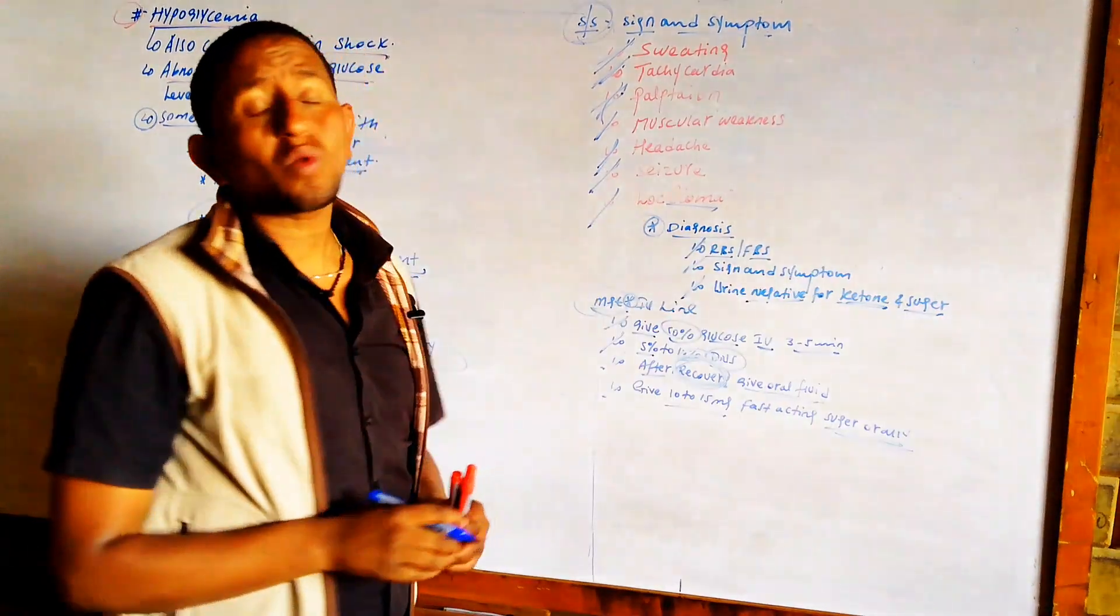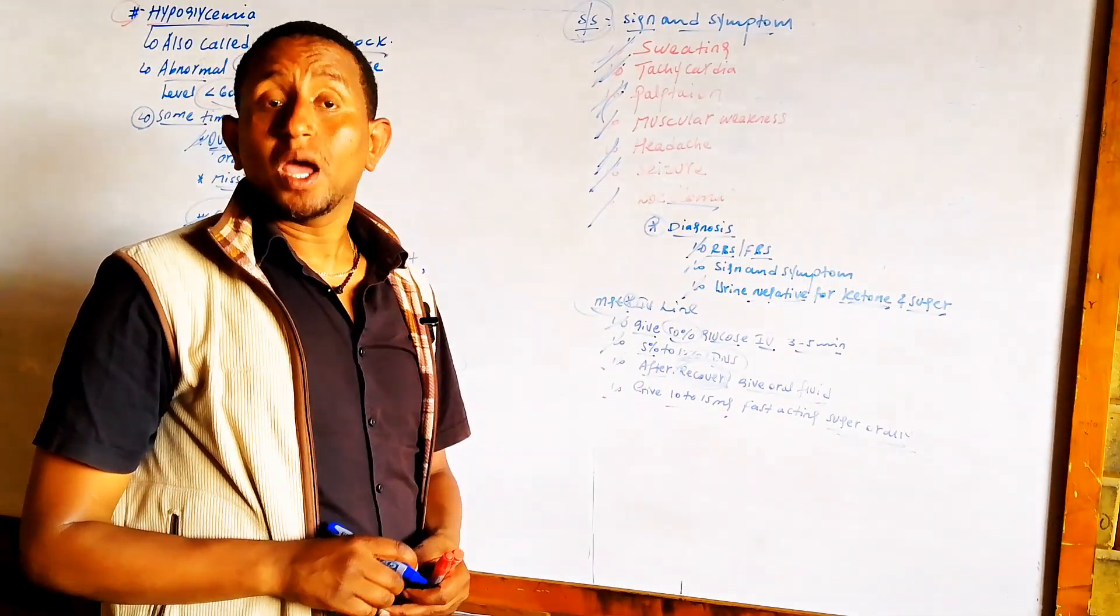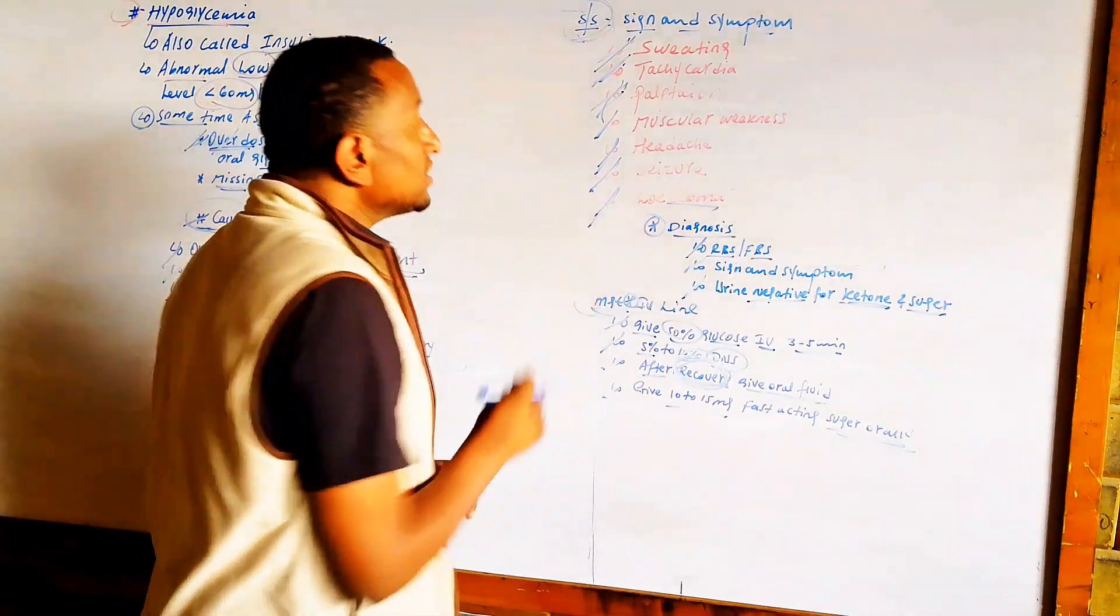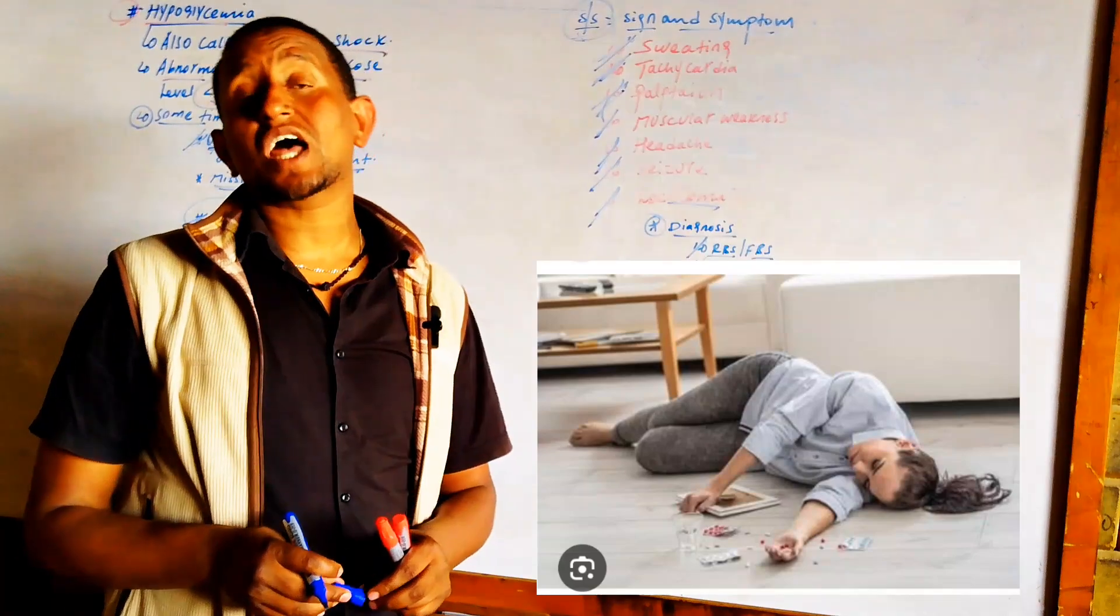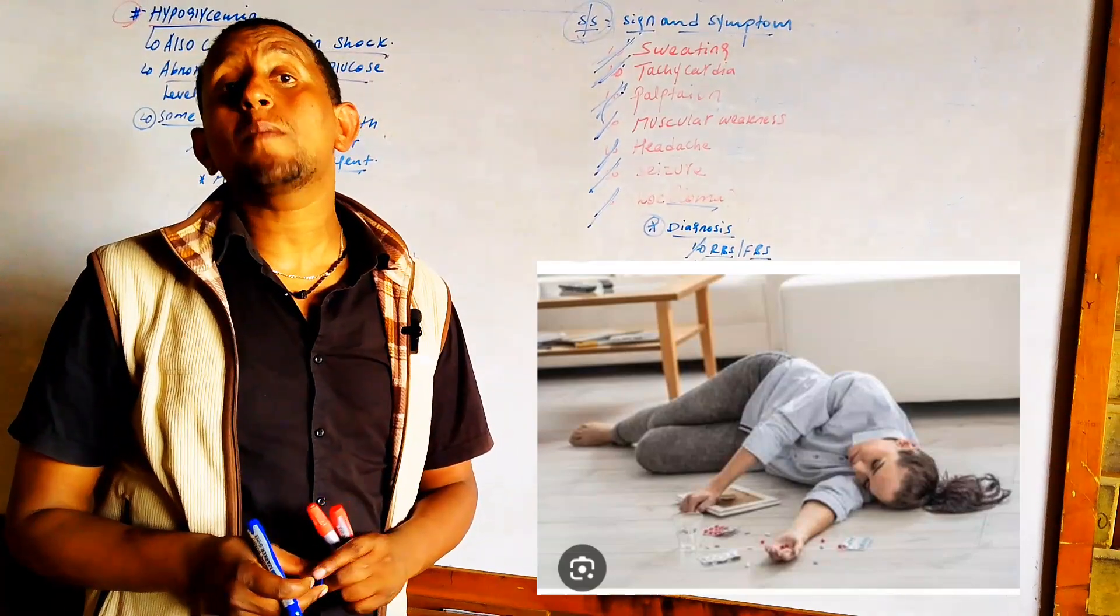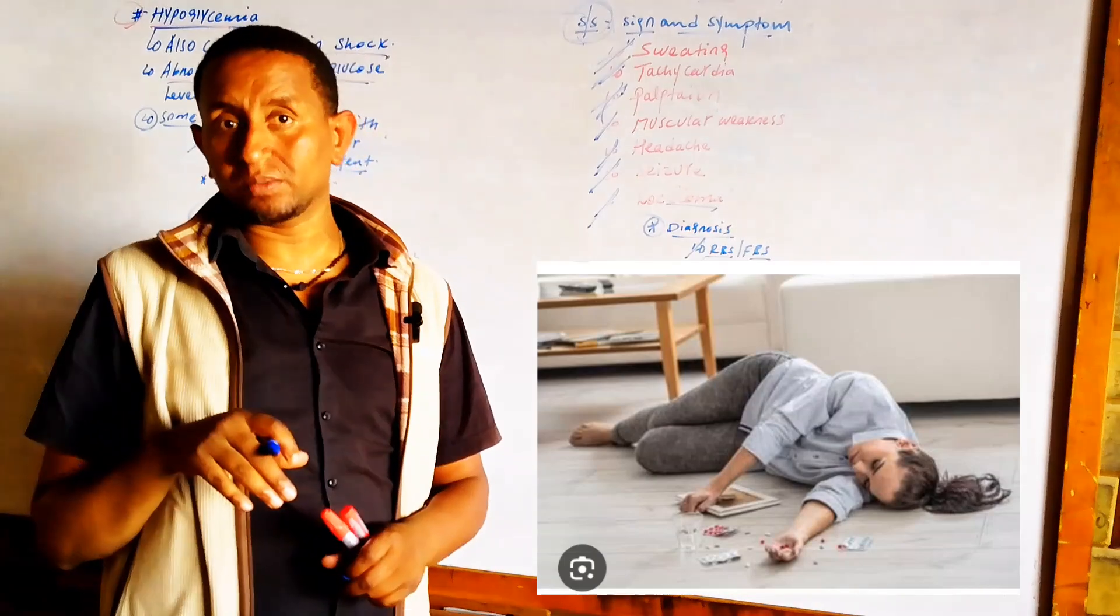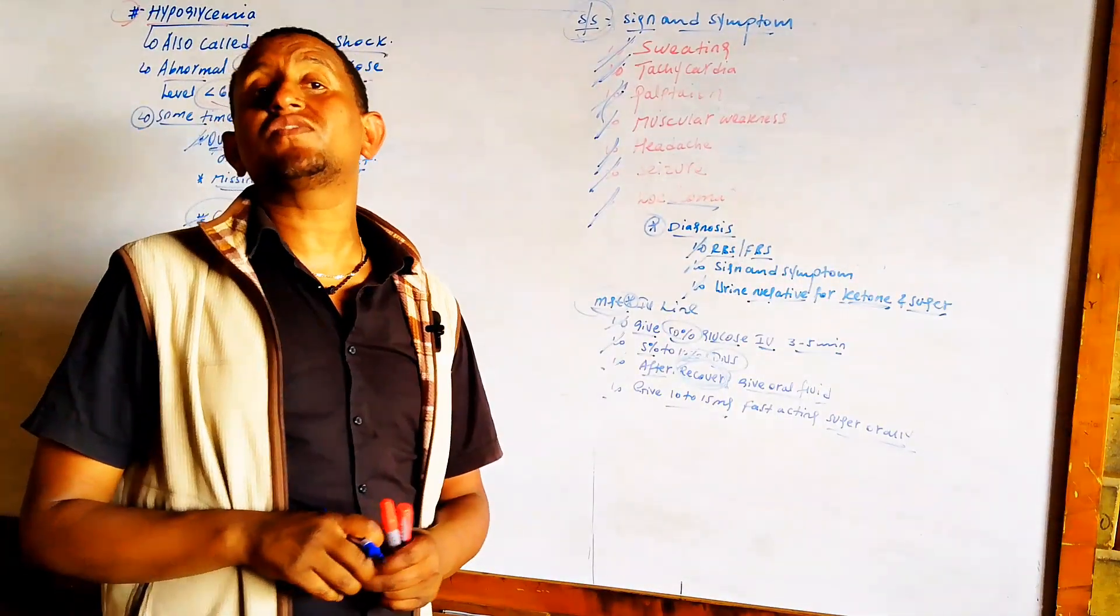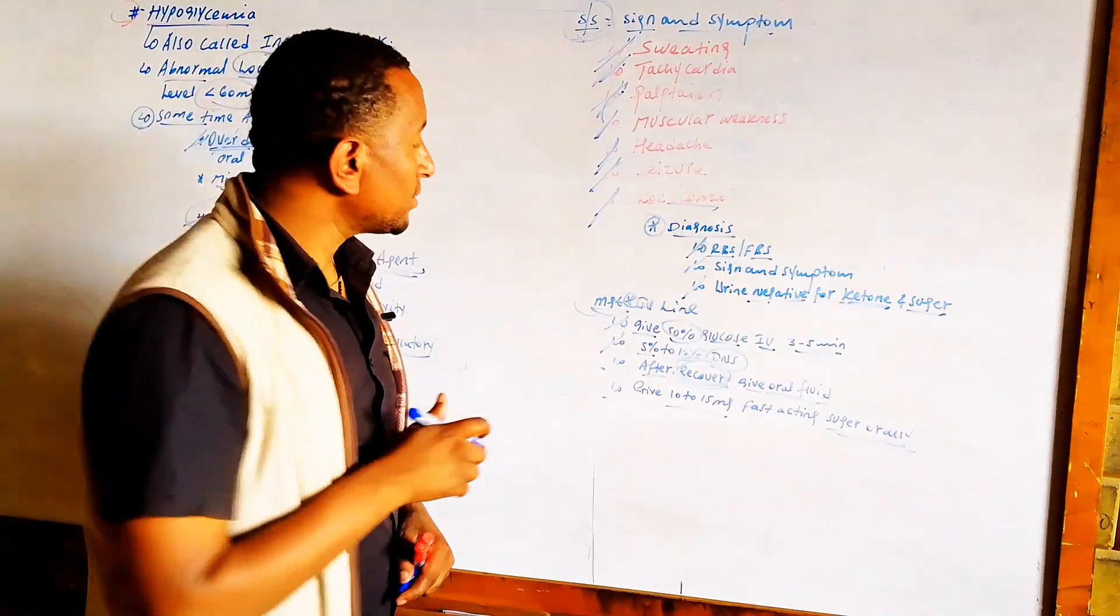The next symptom is seizure. A person has the chance to develop provoked seizures. The most serious complication is loss of consciousness and coma due to hypoglycemic shock. When a person develops hypoglycemic shock with blood glucose levels less than 50 mg per deciliter, they are at risk for developing hypoglycemic shock.